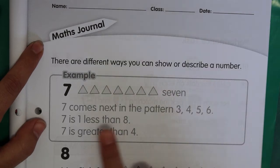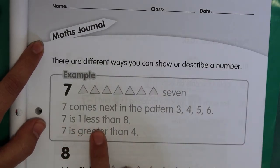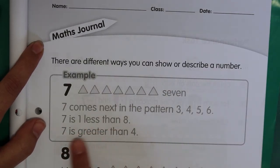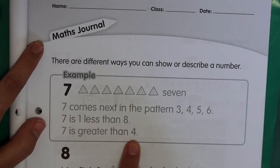Seven is 1 less than 8. And 7 is greater than 4. Greater means bigger, so 7 is bigger than 4.